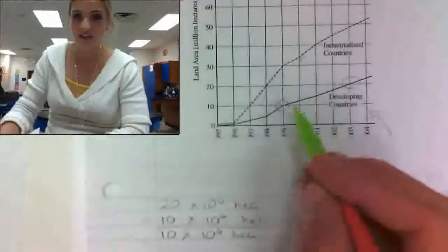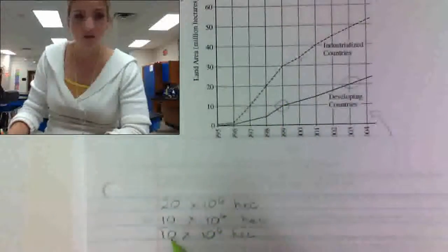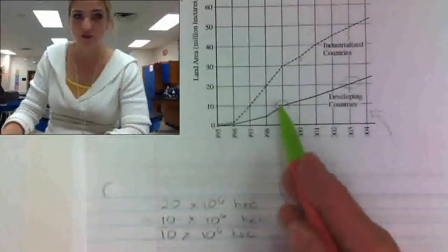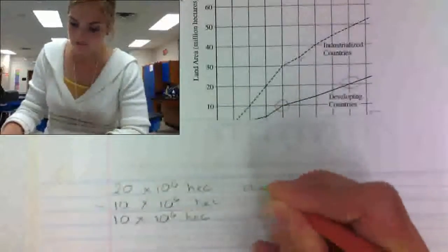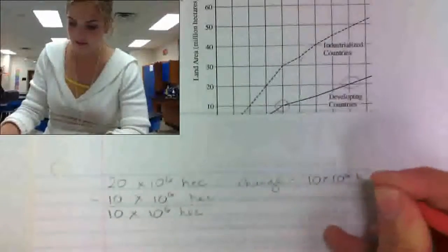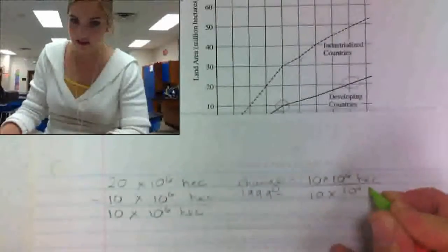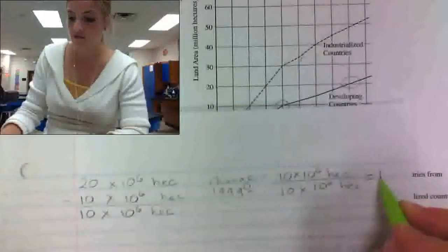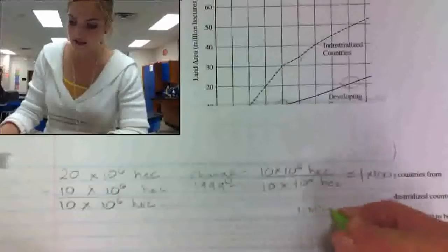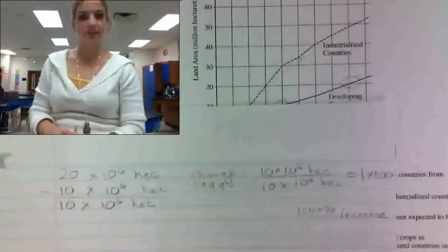Now it wanted me to express this value as a percentage of the 1999 value. The 1999 value was 10 million hectares. If we had a quiz worth 10 points and the total was 10 points, you'd have 100%, right? So my change is 10 million and the 1999 value was 10 million — anything divided by itself is 1, and percent is part divided by whole times 100, so I get 100%.